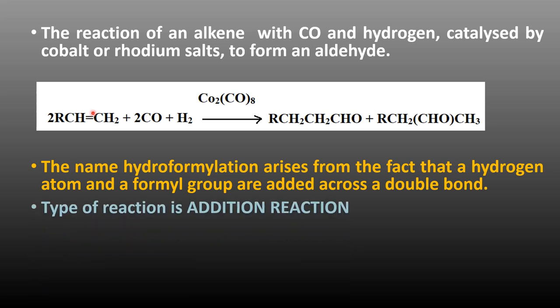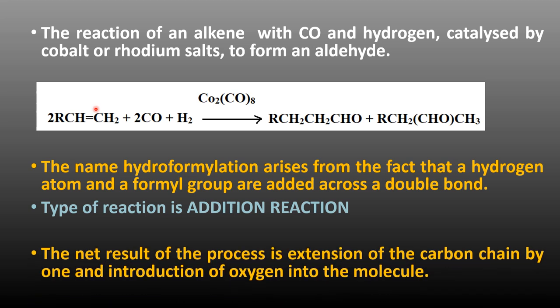This type of reaction is an addition reaction where carbon monoxide and hydrogen are added to the alkene system. The net result of the process is the extension of the carbon chain by one and introduction of an oxygen molecule. In this alkene, there are only two carbon atoms, and the product aldehyde consists of three carbon atoms.